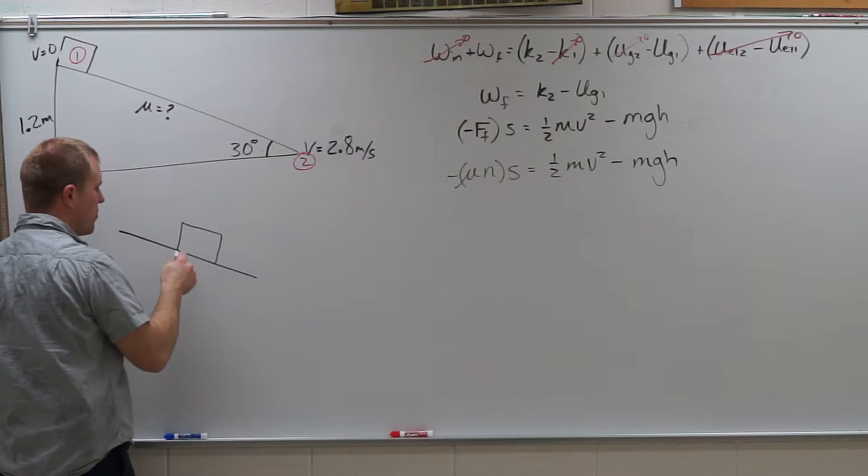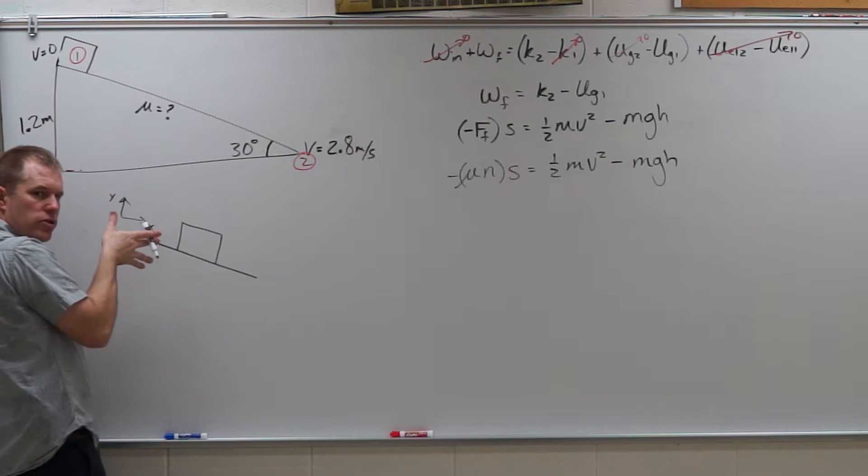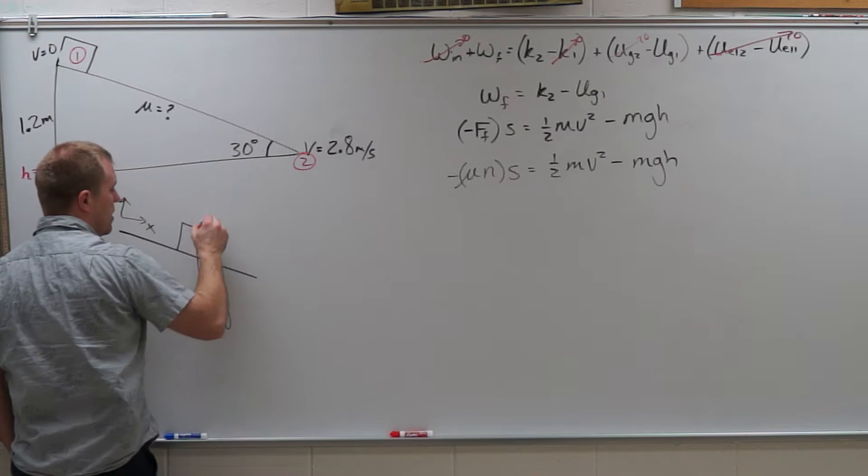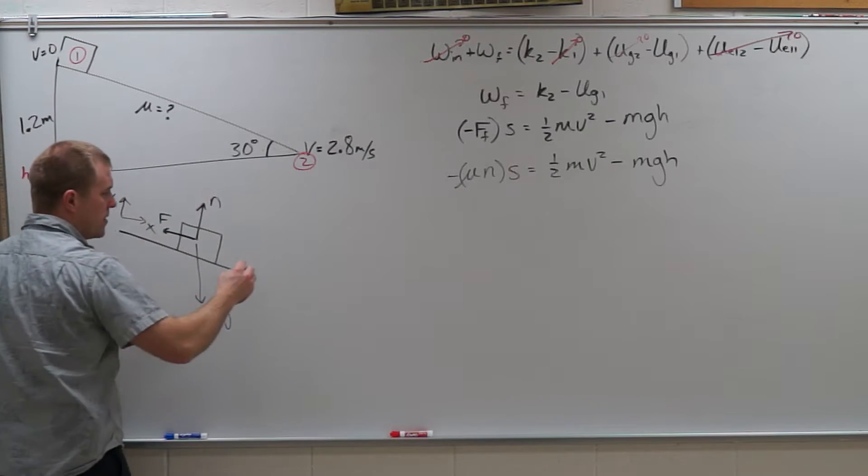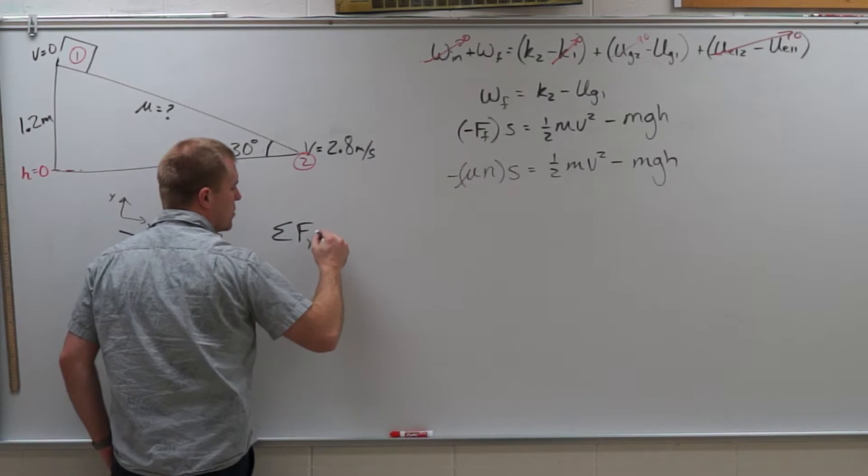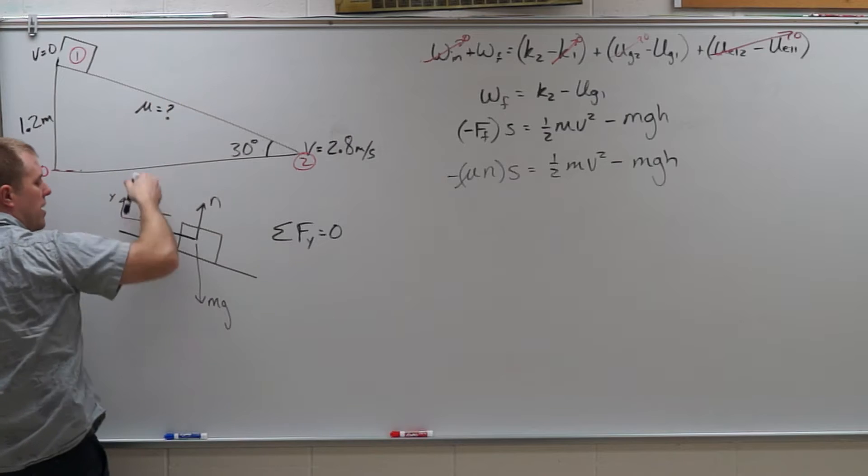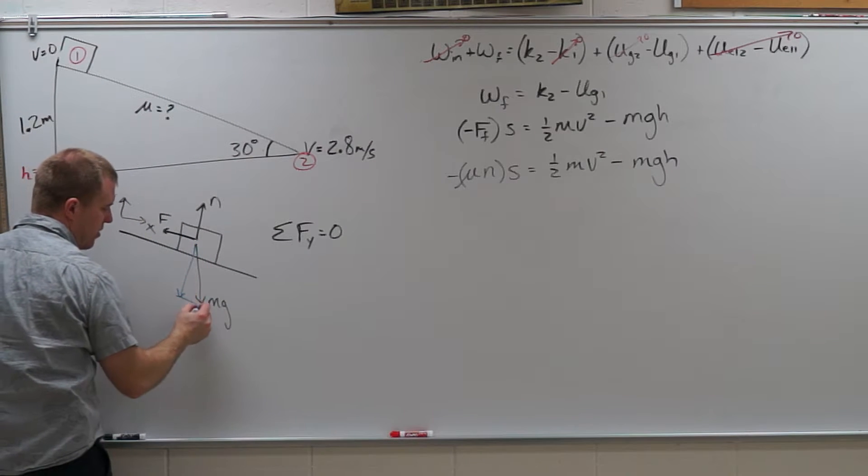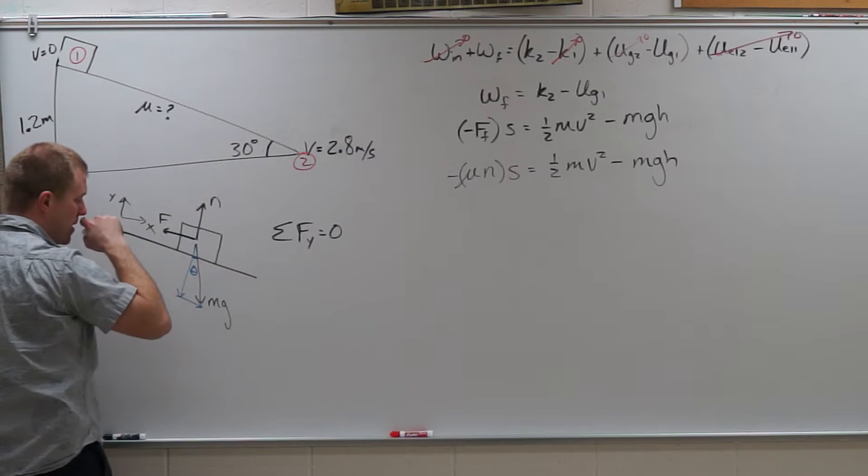Normal force, I need to solve for that in my y direction. So I have my axes rotated here. I'm going to draw my free body diagram so I have gravity, I have normal force, I have friction. The sum of the forces in the y direction is going to be zero because it's not accelerating off of that incline or into that incline. So I will need to resolve mg into components. This angle right here is the same as my 30 degrees.